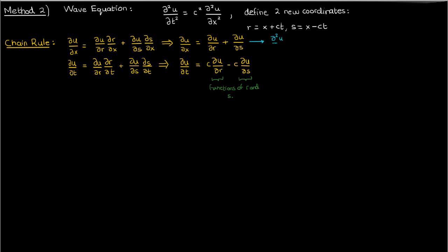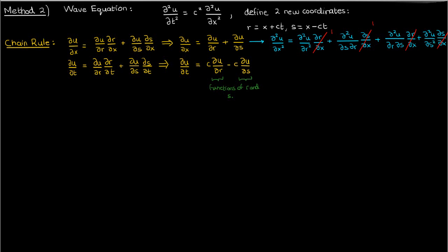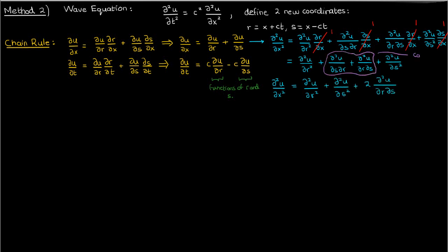Let's start with finding the second partial of u with respect to x. We'll end up with the second partial of u with respect to r times the partial of r with respect to x, plus the mixed partial of u with respect to r and then s times the partial of s with respect to x, plus the mixed partial of u with respect to s then r times the partial of r with respect to x, plus the second partial of u with respect to s times the partial of s with respect to x. The partial of r with respect to x and the partial of s with respect to x are both 1. And since the mixed partial derivatives are both equal by Clairaut's theorem, here's what we'll get for the second partial of u with respect to x.